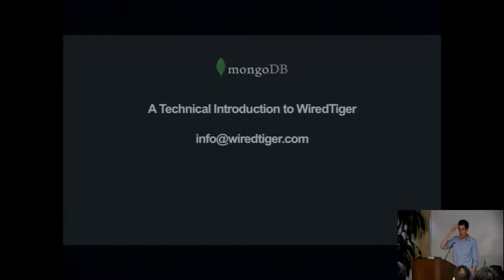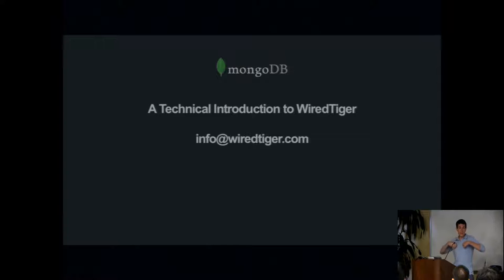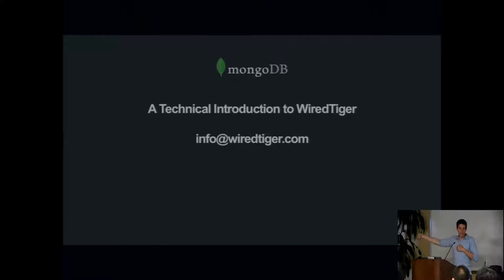BSD is on every single Mac — the user land is BSD and the kernel is Mach. Keith was the lead architect for BSD 4.4. For those of you that don't read the history in your operating system textbook, that was the version of BSD that AT&T decided to sue the University of California over for two years, which left a vacant hole in open source operating systems that then allowed Linus to go off and make Linux. Part of the reason Linux is available today is because Keith decided to ruffle AT&T's feathers.